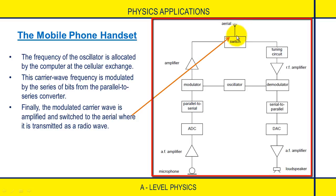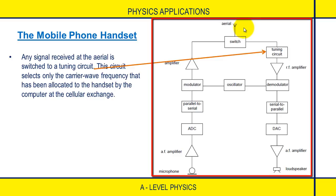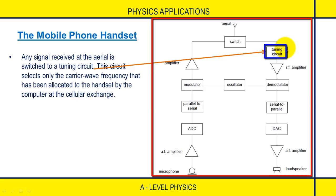Now let's look at the mobile phone handset as a receiver. The antenna receives and converts the electromagnetic wave into an electrical signal. Any signal received at the antenna is switched to a tuning circuit, which acts by the principle of resonance. This circuit selects only the carrier wave frequency that has been allocated to the handset by the computer at the cellular exchange, filtering out all other frequencies.